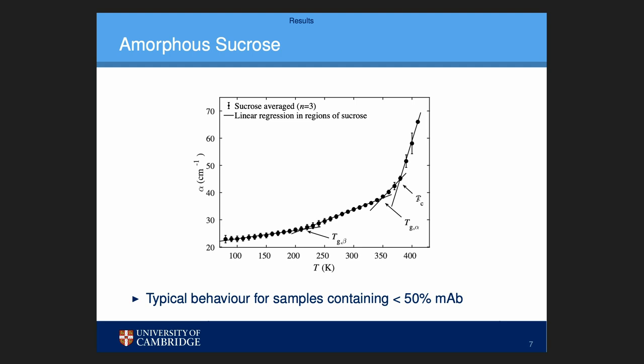As you increase the temperature in the beginning, your absorption increases until you reach Tg_beta. At that point, as you increase the temperature even more, the absorption change is larger.